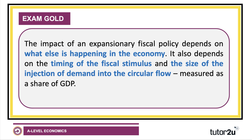The key point is that the impact of an expansionary fiscal policy depends on what else is happening in the economy — what's happening to interest rates, what's happening to house prices. It also depends on the timing of the fiscal stimulus: is it targeted coming out of recession compared to a couple of years later? And it depends on the size of the injection of demand in the circular flow, measured as a share of GDP. Japan's latest fiscal stimulus round is 8% of GDP — that is significant, but will it work? There's a lot of uncertainty there.